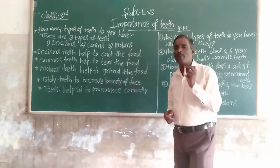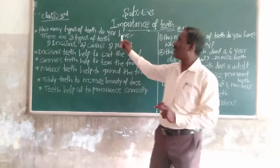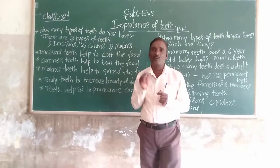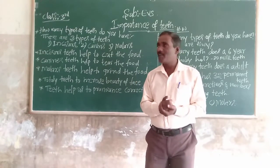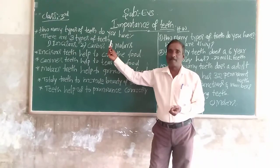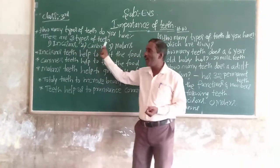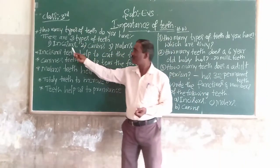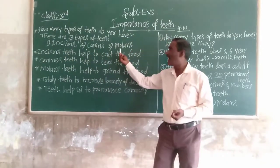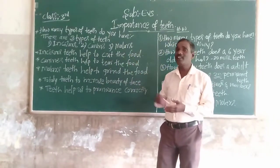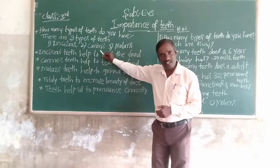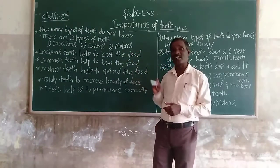How many types of teeth do you have? Within our mouth, there are three types of teeth. There are three types of teeth: incisors, canines, and molars. These are the three types of teeth.